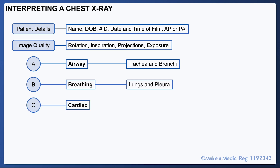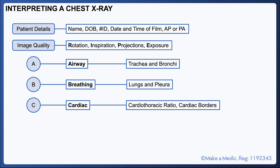Moving on to C, you take a look at the appearance of the heart. You want to make note of the cardiothoracic ratio, which is the ratio of the width of the heart compared to the width of the thorax. A raised cardiothoracic ratio is often seen in patients with heart failure. It's important to also trace the heart borders because obscuring of the heart borders may be suggestive of retrocardiac masses or consolidation.